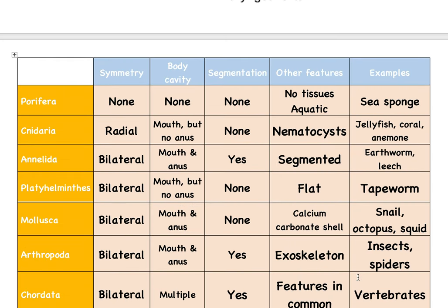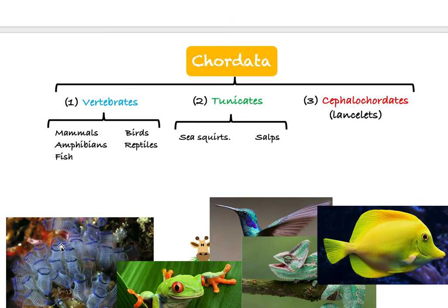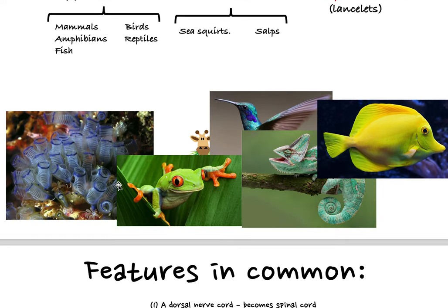Here is a summary table that includes all the key things you need to know. The names will take some repetition to memorize. I'll make a separate video on vertebrates since it needs more detail, but for the IB you don't need to know much beyond what was covered here — just know vertebrates fall under the category of Chordata. That's it for the animal phyla.